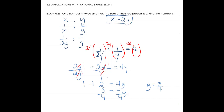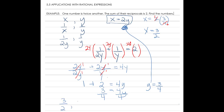Now that we know y, we can solve for x. We plug in y and get x equals 2 times 3 fourths. Reducing — 2 goes into 4 twice and 2 goes into 2 once — so x equals 3 halves. Our two numbers are 3 halves and 3 fourths.